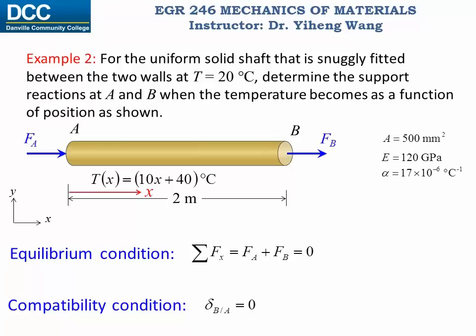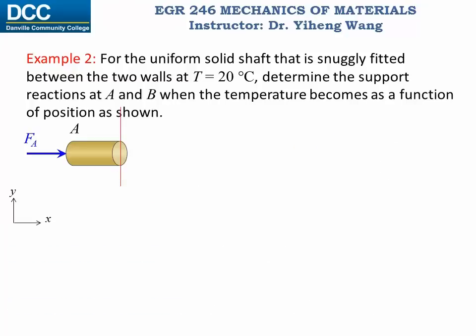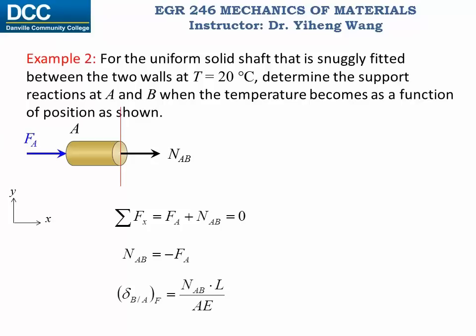The displacement has two contributions: one from the force and one from the temperature change. To determine the displacement caused by force, we need the internal normal force. We section the member anywhere between points A and B, take the left-hand side, draw the internal normal force NAB, write the equilibrium equation, and get NAB = −FA. Therefore, the displacement caused by the force equals the internal normal force times length over cross-sectional area and Young's modulus, giving us −FA · L / (A · E).